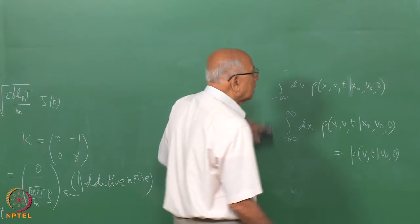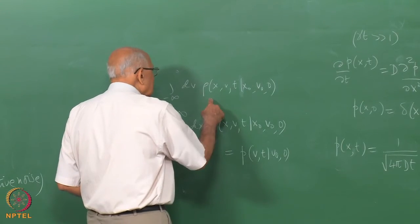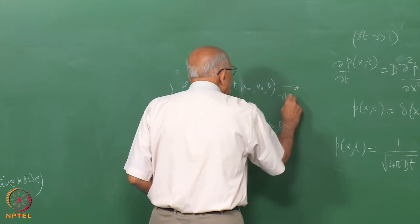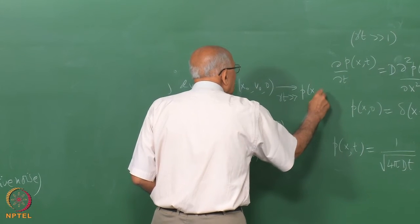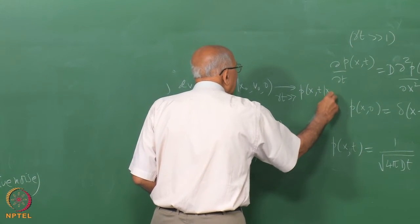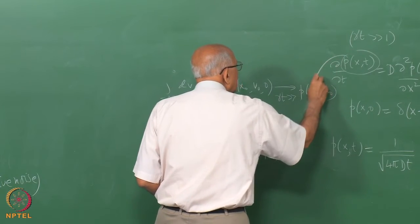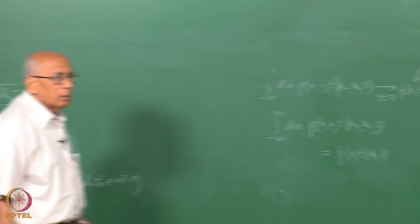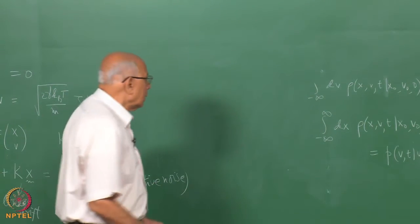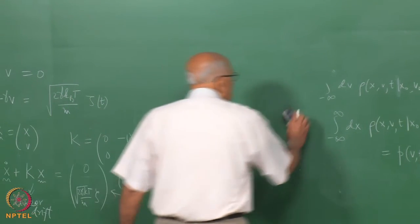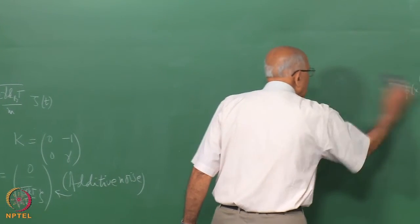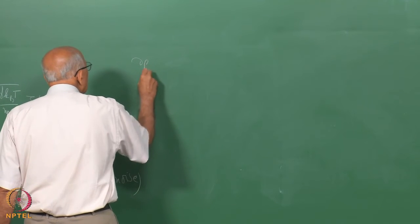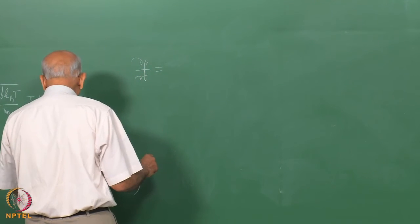To summarize the relation: the integrated positional density equals the diffusion-equation solution P of x, t only in the limit gamma t much greater than 1. So P of x, t approaches that solution only asymptotically, not for all t.